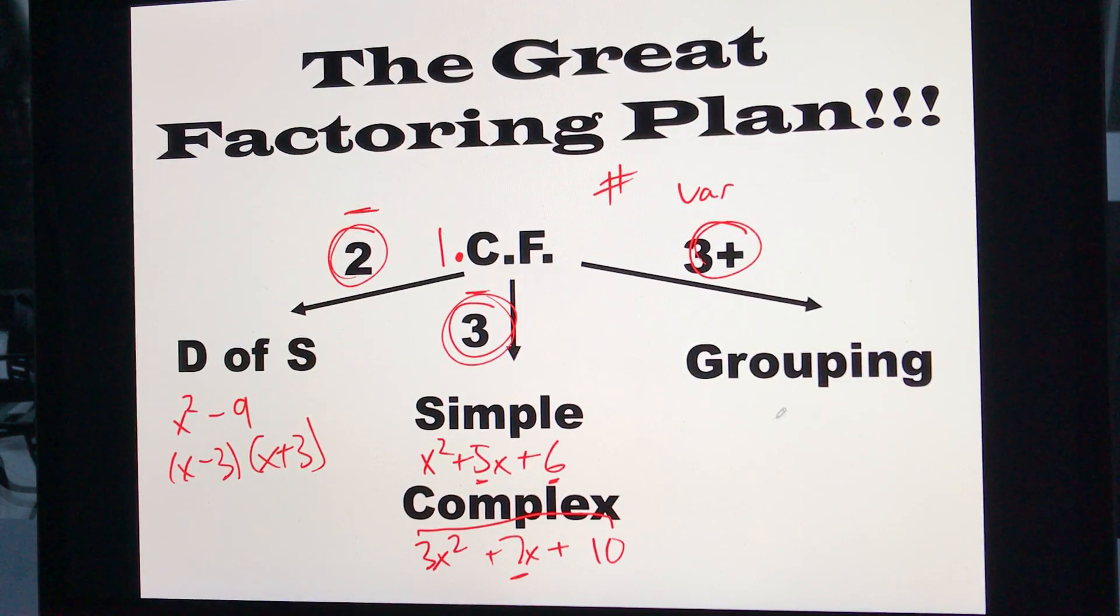If we're 3 or 4, really, we did the idea of grouping. So we had, say we had a plus b plus c plus d. We try to group up the first two and then common factor, and we try to group up the second two and common factor.